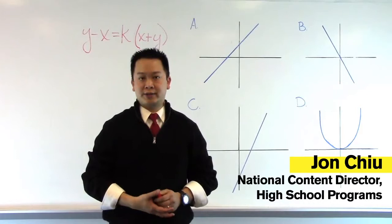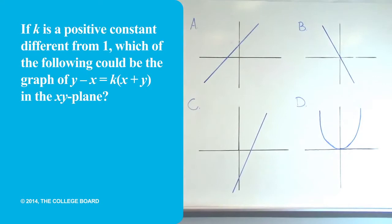If k is a positive constant different from one, then which of the following could be the graph of y minus x is equal to k times the quantity x plus y in the xy plane.